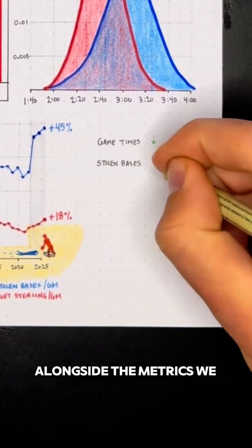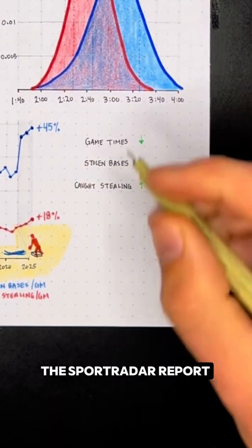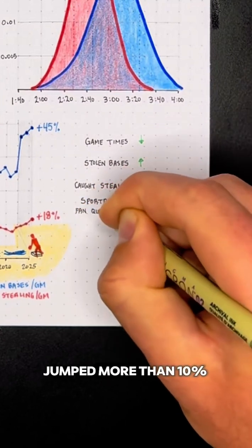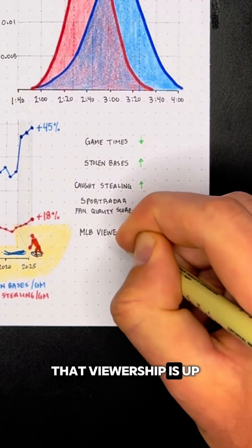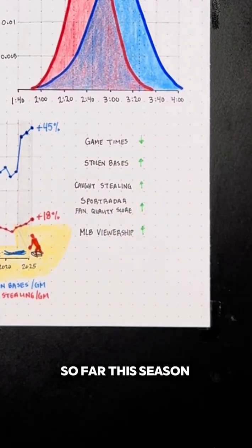baseball fans are loving it. Alongside the metrics we just discussed, the Sport Radar report found that fan quality score jumped more than 10% after the changes, and the league reported last week that viewership is up double digits so far this season.